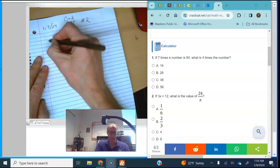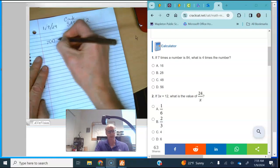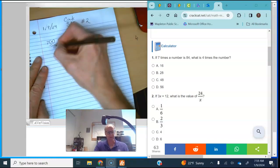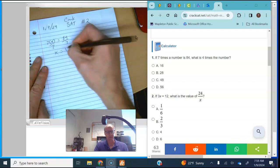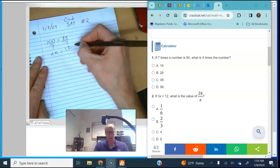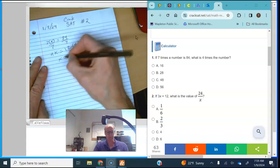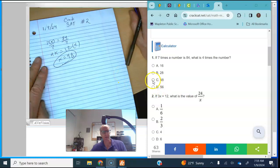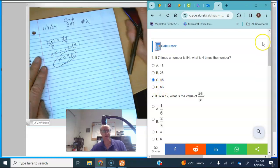So number one says if seven times a number is 84, what is four times the number? So divide by seven and you get x is equal to 12, and we multiply by four and we get x equals 48. So that's number one and we put the answer in and you'll notice I like to write down things.